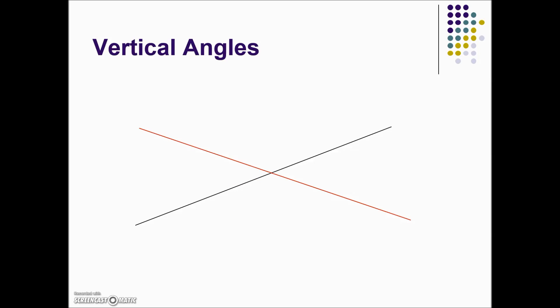When two lines intersect as shown, vertical angles are created. There are four angles here and angles that are across from one another are equal.